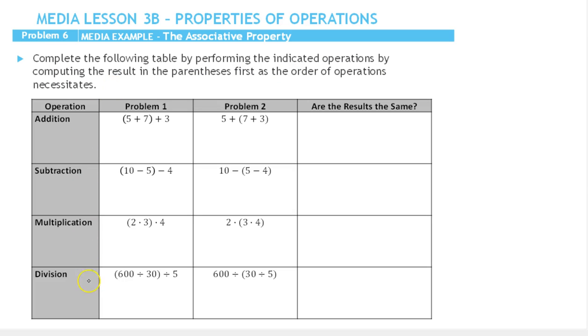Notice we have all four operations, and we're doing two operations in each problem. There's two additions here and two additions here. But notice the parentheses are changing the order in which we do the addition. Here we'd need to do 5 plus 7 first, here 7 plus 3. And this is the same for each of these. So we're going to look at whether the results are the same and what that means.